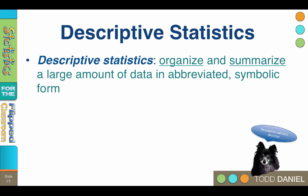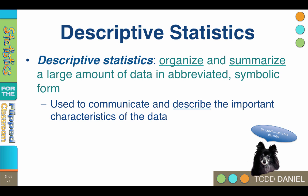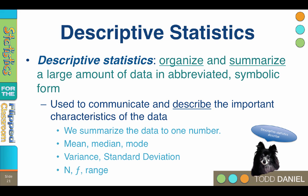Another way to describe statistics is to separate them based on what they do. We call them descriptive or inferential statistics. Descriptive statistics are procedures that organize and summarize a large amount of data, like the mean or the standard deviation. Descriptive statistics are used to interpret and describe the important characteristics of the data. They can simplify millions of numbers into a single number that can be used for comparisons.